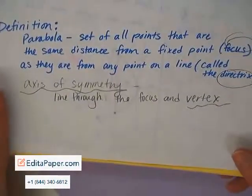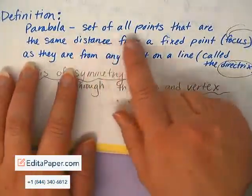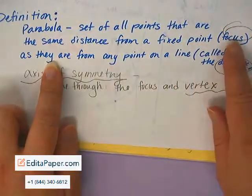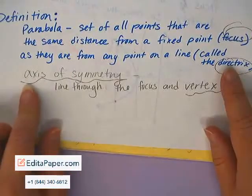Today we're focusing on parabolas. Here's the actual definition of a parabola. A parabola is a set of all points that are the same distance from a fixed point called a focus as they are from any point on a line called the directrix.